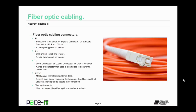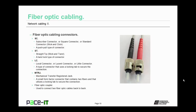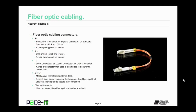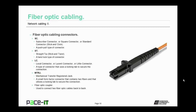Now let's talk about fiber optic cabling connectors. First up is the SC, the subscriber connector — also called the square connector or standard connector. An easy way to remember it is 'stick and click'; it's a push-pull type connector. Then we have the ST, the straight tip — think of this as 'stick and twist'. It is a spring-loaded, twist-lock type of connector. There is also the LC, which can be called the local connector, loosened connector, or little connector. It uses a locking tab to secure the connection. Similar to the LC is the MTRJ, the mechanical transfer registered jack — a small form factor connector that contains two fibers and also utilizes a locking tab to secure the connection.